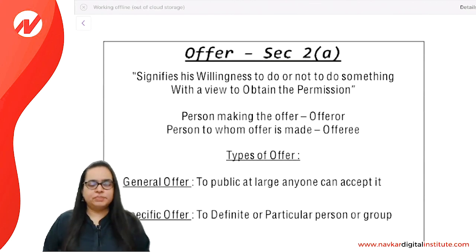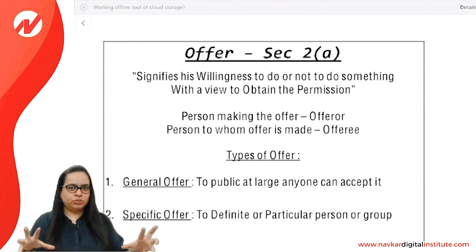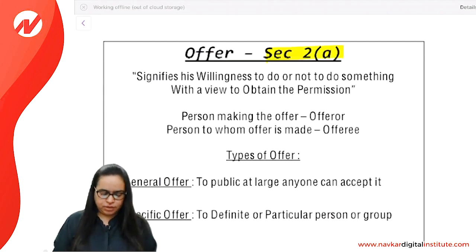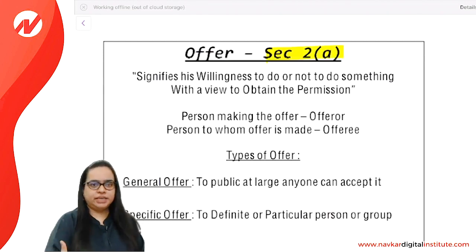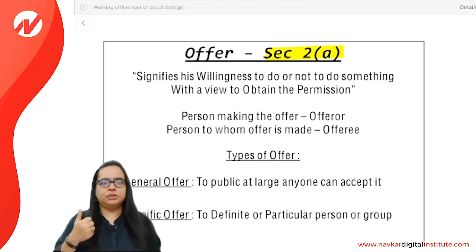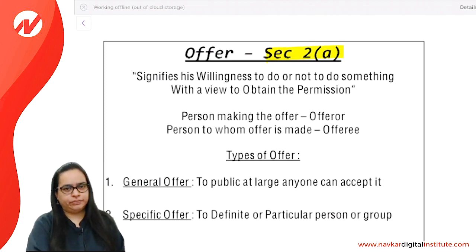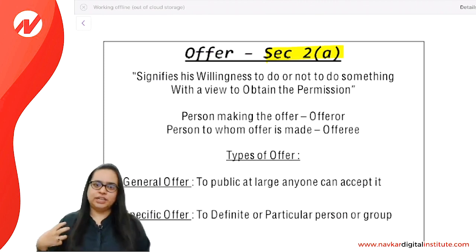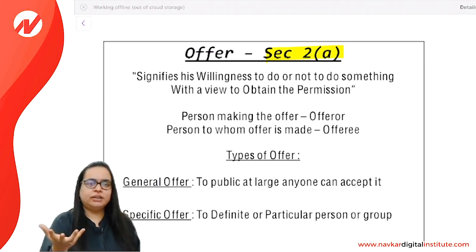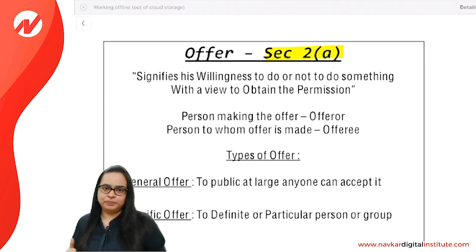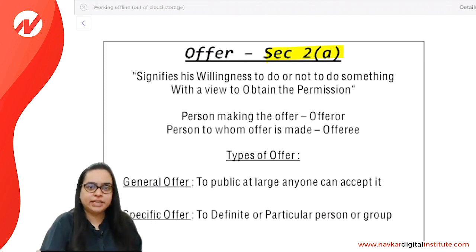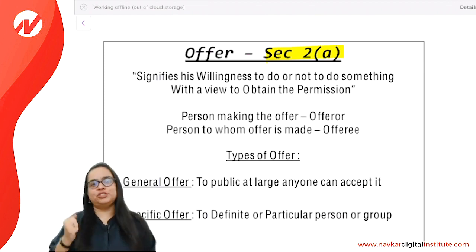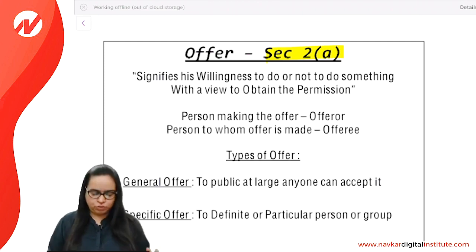After offer, we will cover the important points for a quick revision. The definition of offer is Section 2A: when a person signifies his willingness to do or not to do something, with a view to obtaining the assent of the other party. Tell your wish and ask permission. For example, A says to B: 'Will you sell goods for 10,000?' — that is an offer.